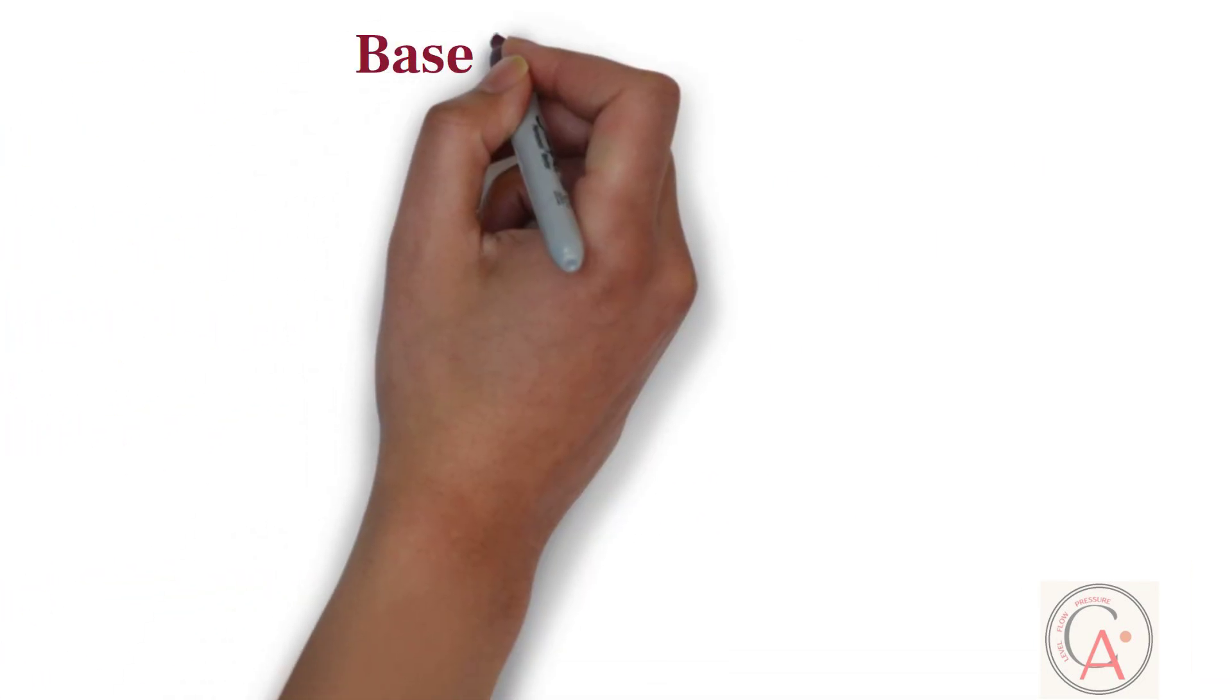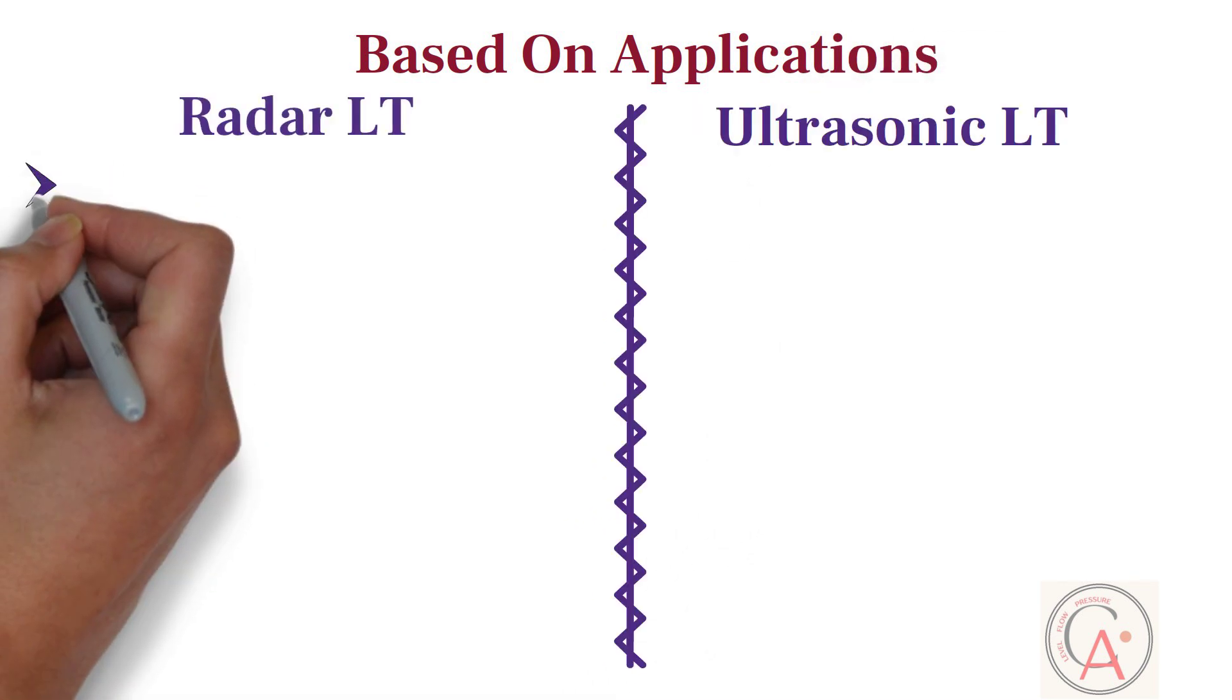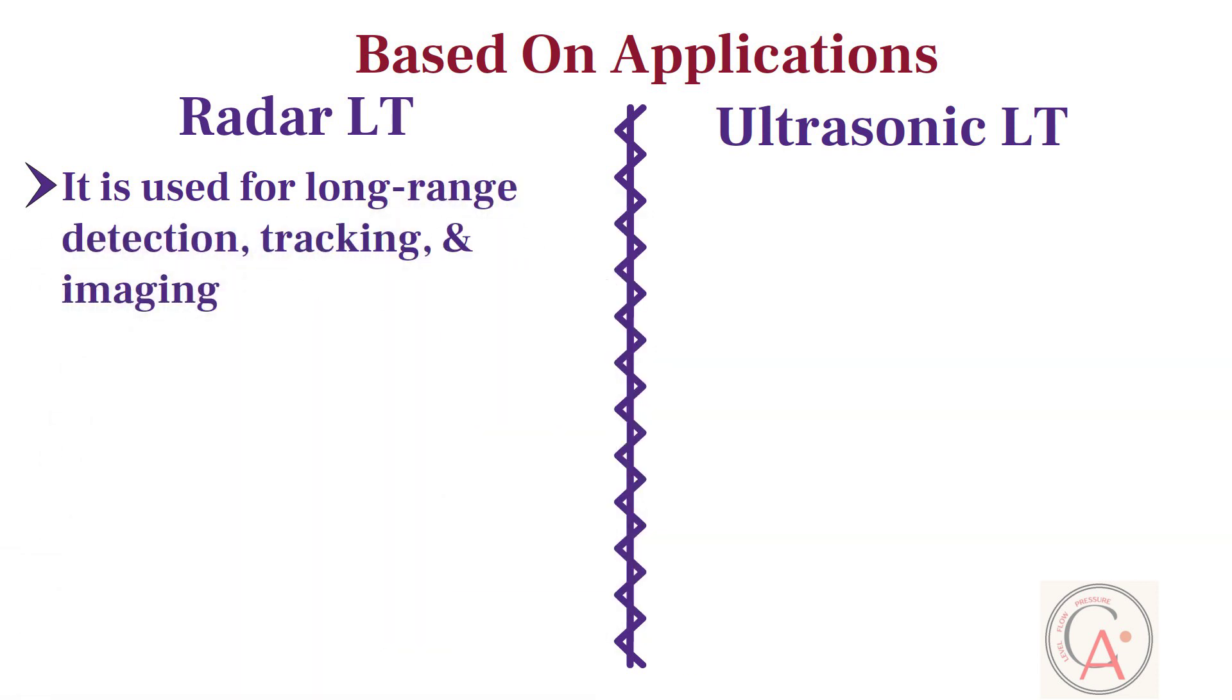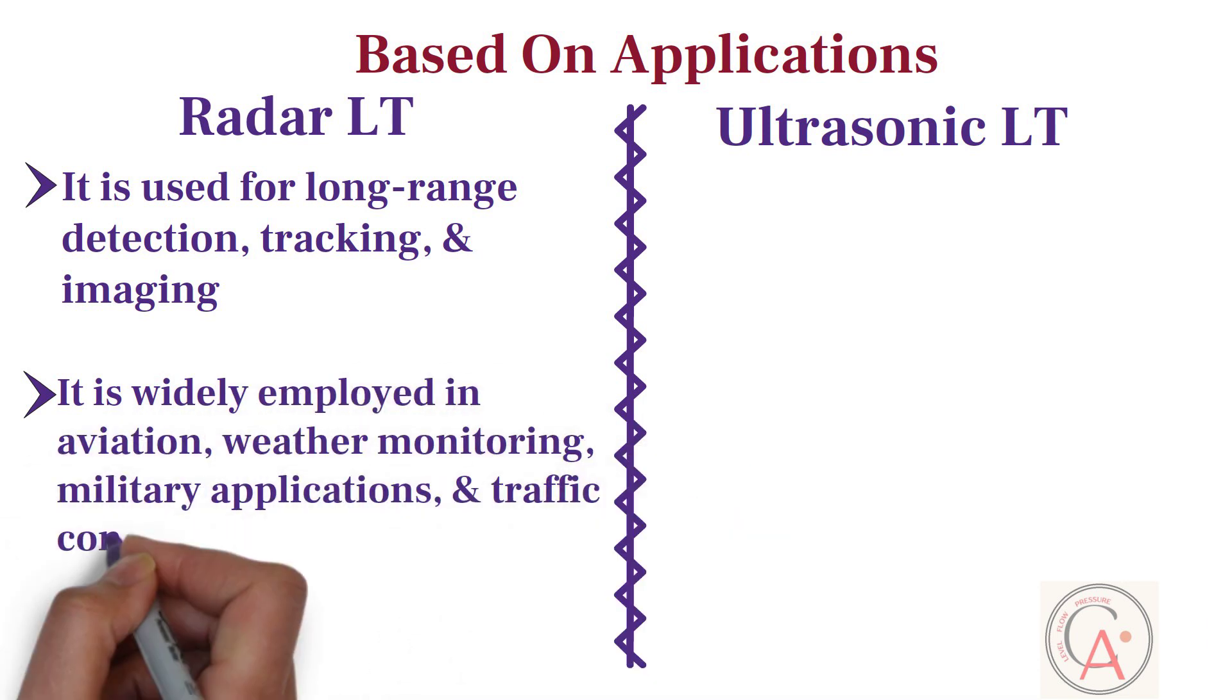Now let's compare both technologies based on applications. Radar is commonly used for long-range detection, tracking, and imaging. It is widely employed in aviation, weather monitoring, military applications, and traffic control systems.